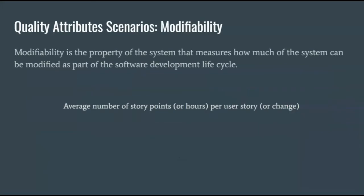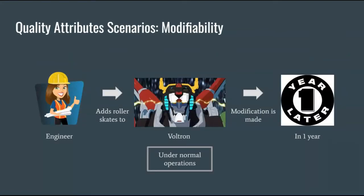The next attribute is modifiability. An example scenario would be: when an engineer decides to add roller skates to Voltron, under normal operations, the modification can be done in one year. You will see the environment specified as 'under normal operations' quite a bit in Quality Attribute Scenarios, mainly because the system is under normal operations most of the time.